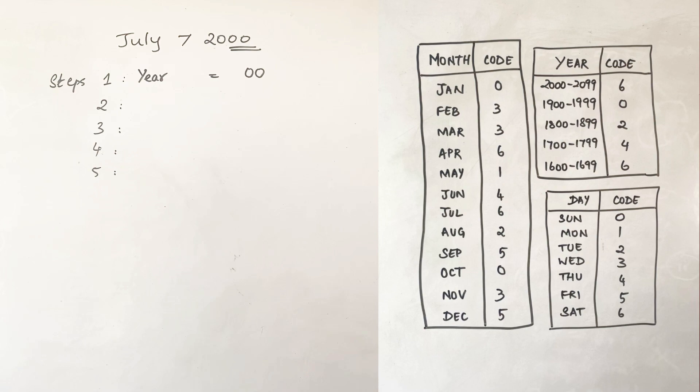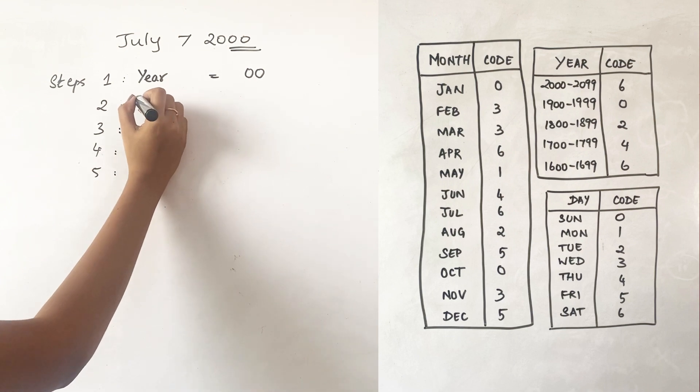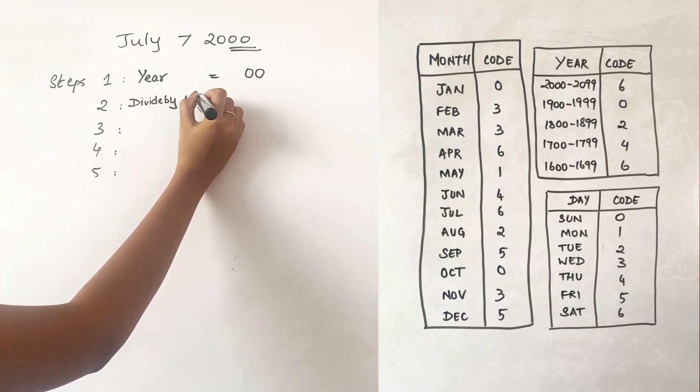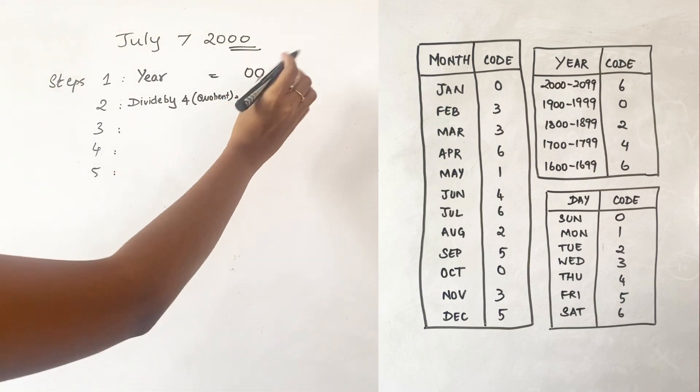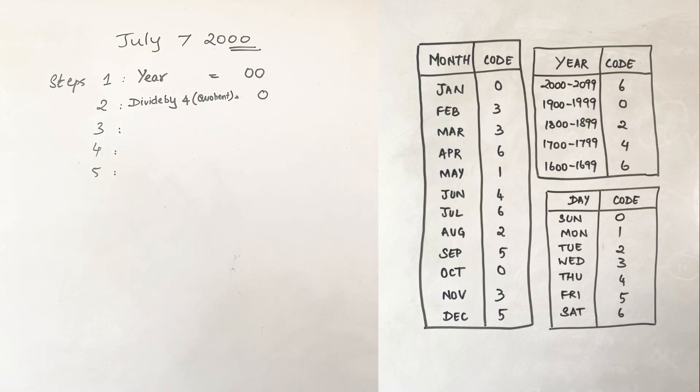The second step is to divide step one by four and write the quotient. For example, zero divided by four is zero. The quotient is zero. The catch here is you just have to write the quotient. Do not worry about the remainder. You should not put any decimal values, just the quotient straight away. If there is 10, you have to write two. If there is 8, you have to write two. If there is 12, you have to write three, and so on.